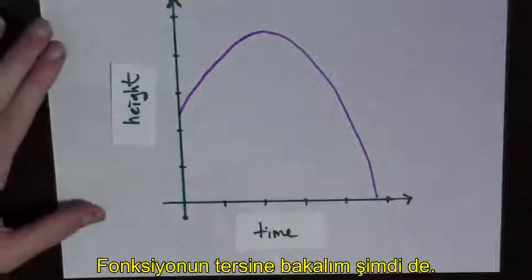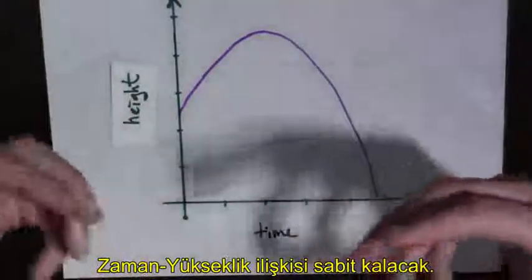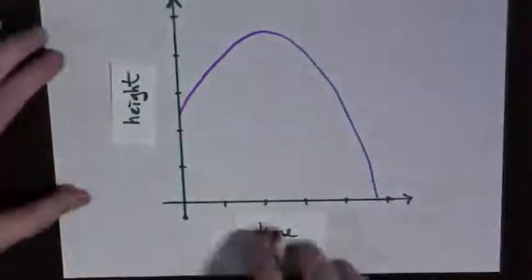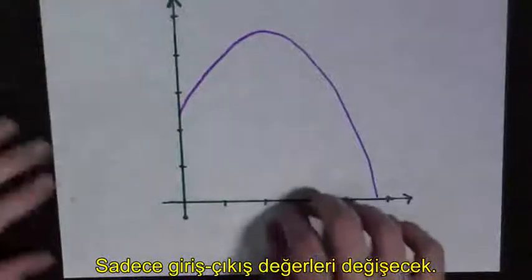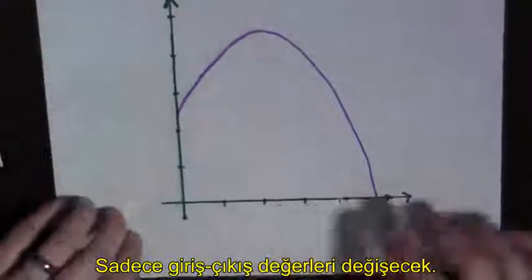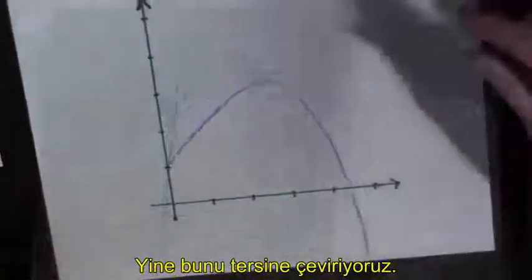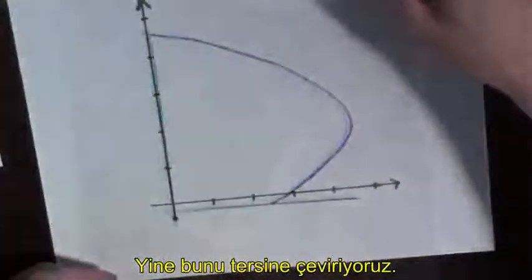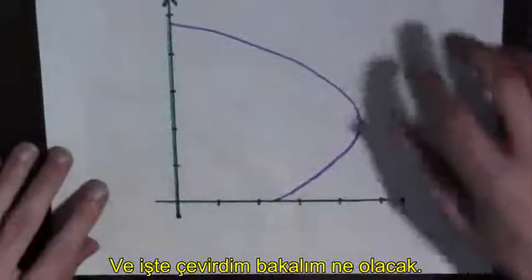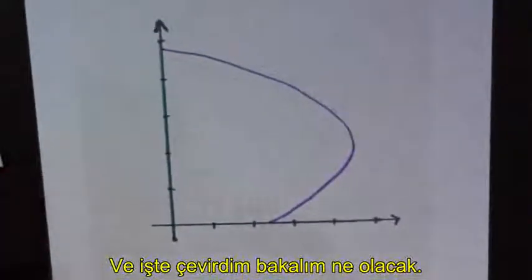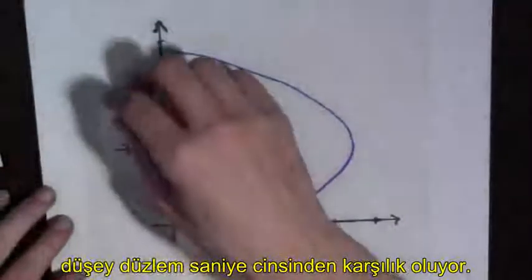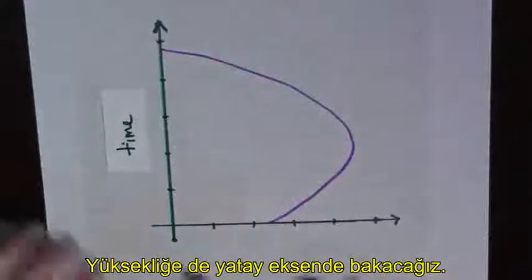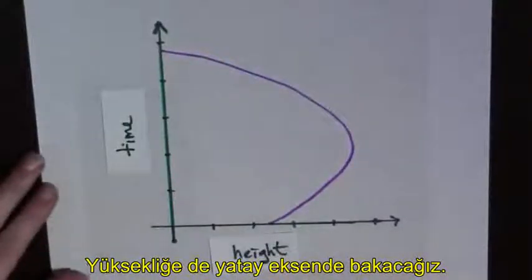So what does the inverse look like? Well, the inverse, the relationship between time and height is the same. The only thing that changes is what's the input. And so we have to flip this over the line y equals x. Here we go, I just flipped it. And now what's going to happen is time goes on the vertical axis and height goes on the horizontal axis.